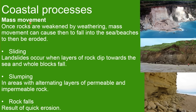Here we have mass movement. Once rocks are weakened by these processes, mass movement can cause them to fall into the sea and beaches, and then the sediment is eroded. The first example is sliding — landslides are where layers of rock dip towards the sea and whole blocks fall. Slumping happens in areas with alternating layers of hard and soft, or permeable and impermeable, rock which slump down. Rock falls happen due to rapid erosion.